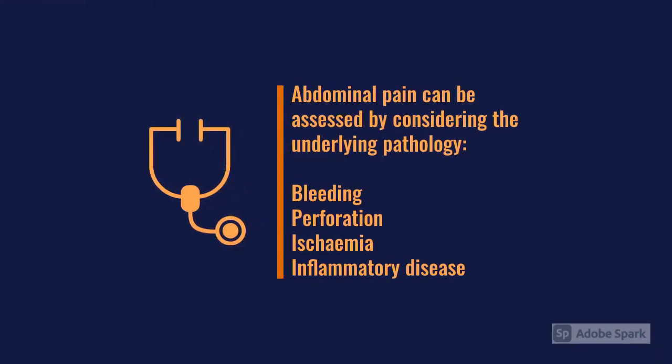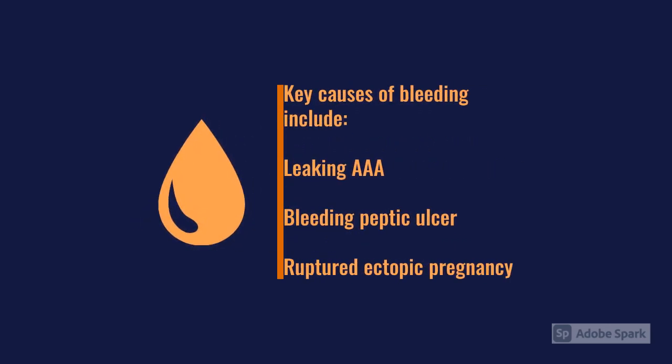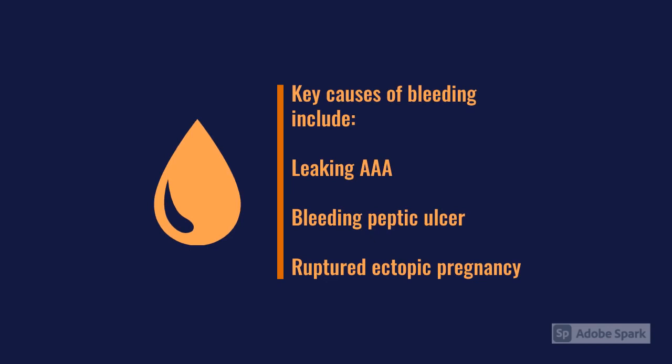The other way to think about causes is by underlying pathology: bleeding, perforation, ischemia, and inflammation. Regarding bleeding, the GI tract is very long and patients can lose a significant blood volume before presenting. These patients can come in shocked — hypotensive, sweaty, tachycardic, and pale. If you see someone with abdominal or back pain who is cardiovascularly unstable, always consider bleeding. Key causes include a leaking triple A, a bleeding peptic ulcer or upper GI bleed, or a ruptured ectopic pregnancy.